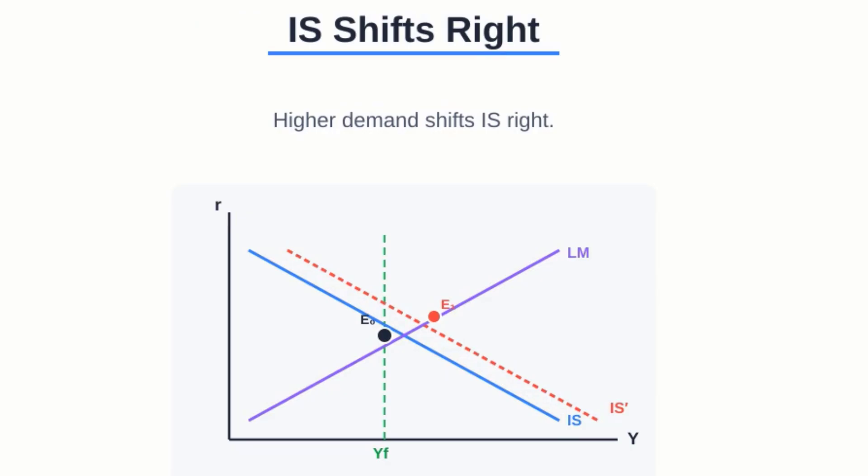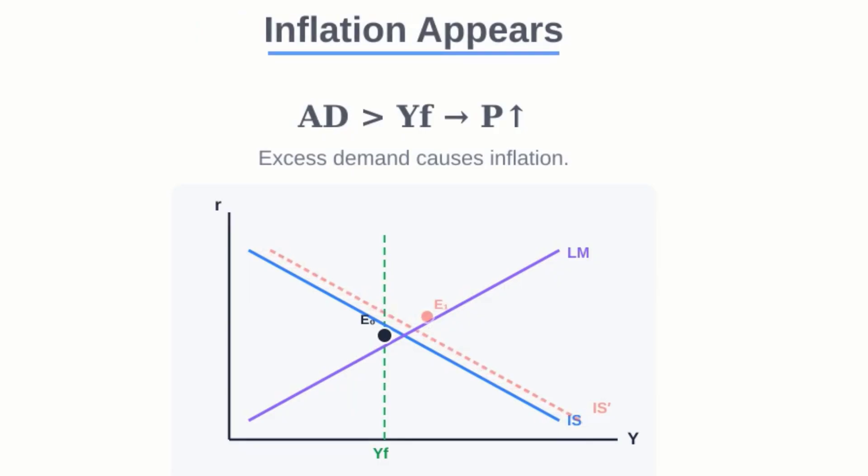Second, the market pushes back. As all those prices are climbing, the real value of our money supply shrinks. This causes the LM curve—that's the one for the money market—to shift back to the left.